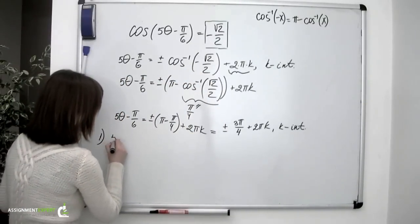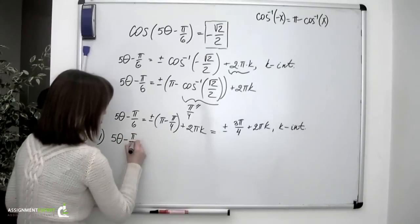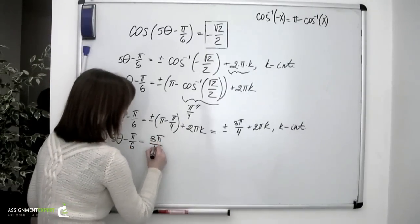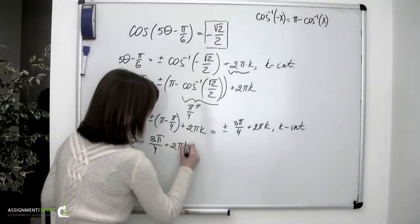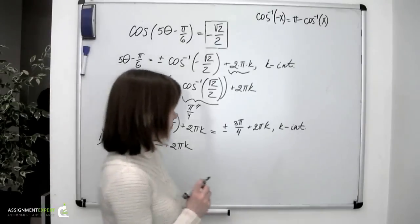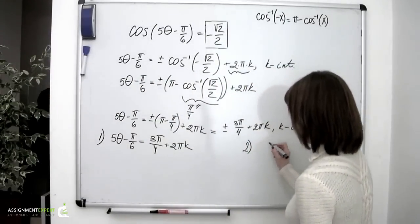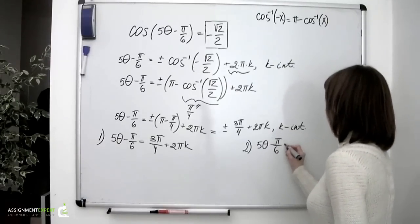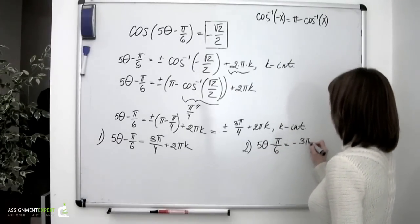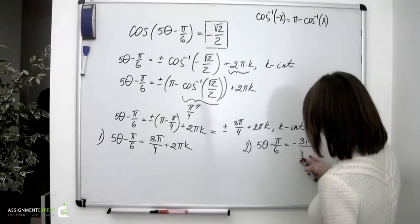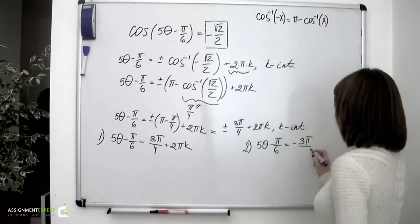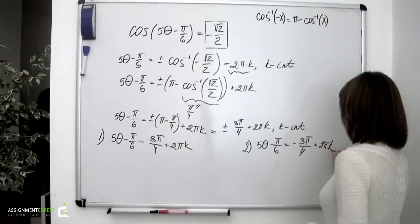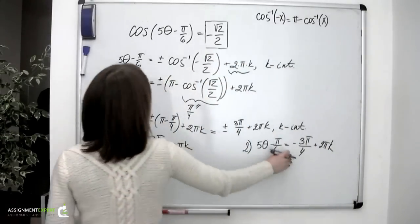We split this into two equations. The first one: 5 theta minus pi over 6 equals positive 3 pi over 4 plus 2 pi k. The second: 5 theta minus pi over 6 equals negative 3 pi over 4 plus 2 pi k. Let's now solve these two equations.